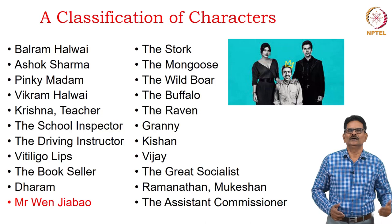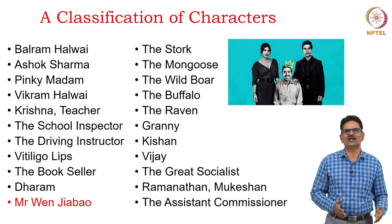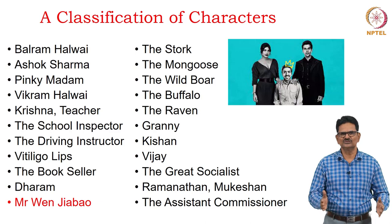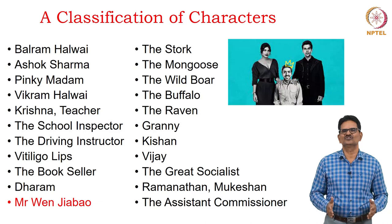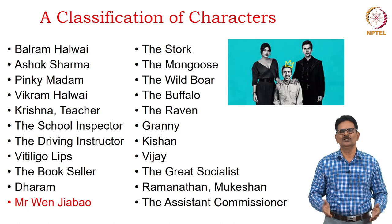Characters from the land of darkness include the Stork, the Mongoose, the Wild Boar, the Buffalo, and the Raven — associated with Laxmangarh, the place from which Balram hails. Family members include Granny Kusum, Kishan his brother, and Vijay the bus conductor. We also have the Great Socialist, who becomes a national leader at the end of the novel, and bureaucratic characters Ramanathan and Mukeshain, plus a police officer — the assistant commissioner in Bangalore.